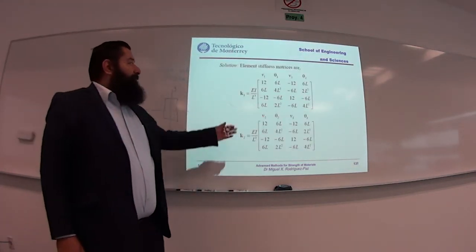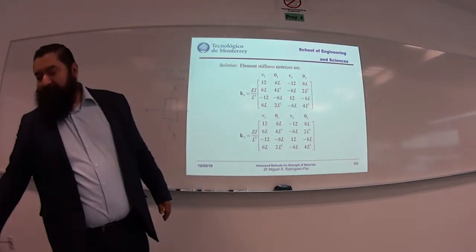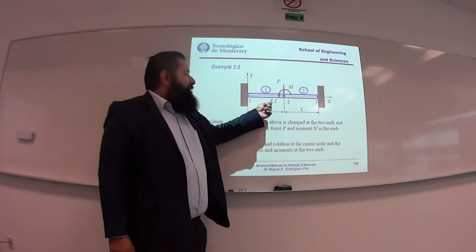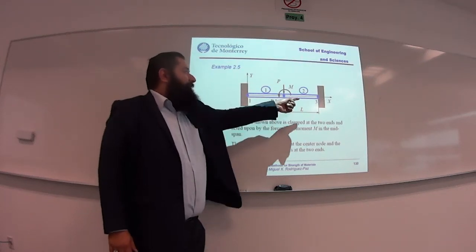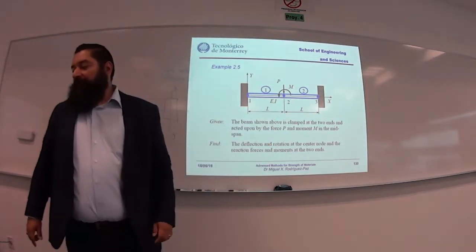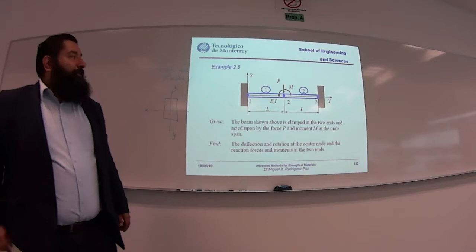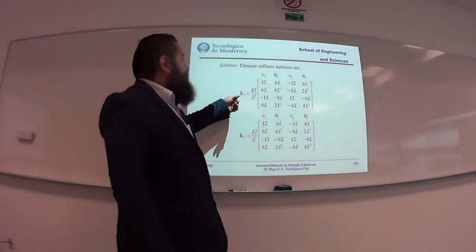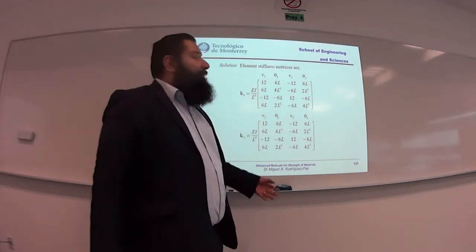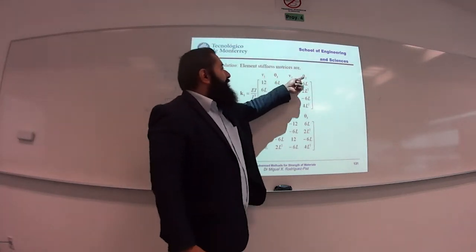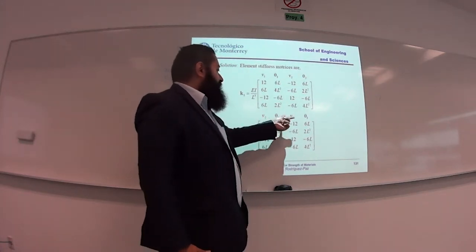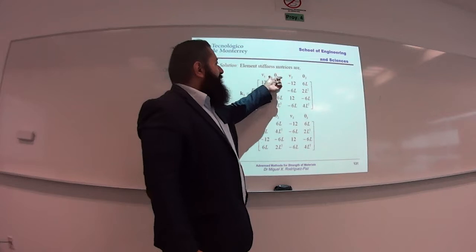The element stiffness matrices are as shown. The cross-section is constant, so there is the same moment of inertia for the whole beam and a constant elastic modulus E. The stiffness matrix for beam element 1 is this; beam element 2 is identical in form but with different degree-of-freedom labels. Beam 2 connects from node 2 to node 3; beam 1 connects from node 1 to node 2.